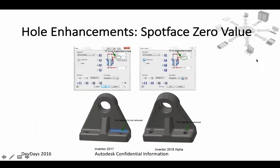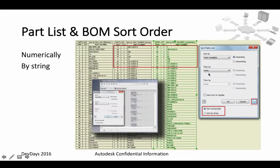You also have the spot face zero value, which wasn't supported in the current version but will be in the oncoming 2018 version. There's also sorting functionality inside part lists and BOM — you can numerically or by string sort all the items inside them.